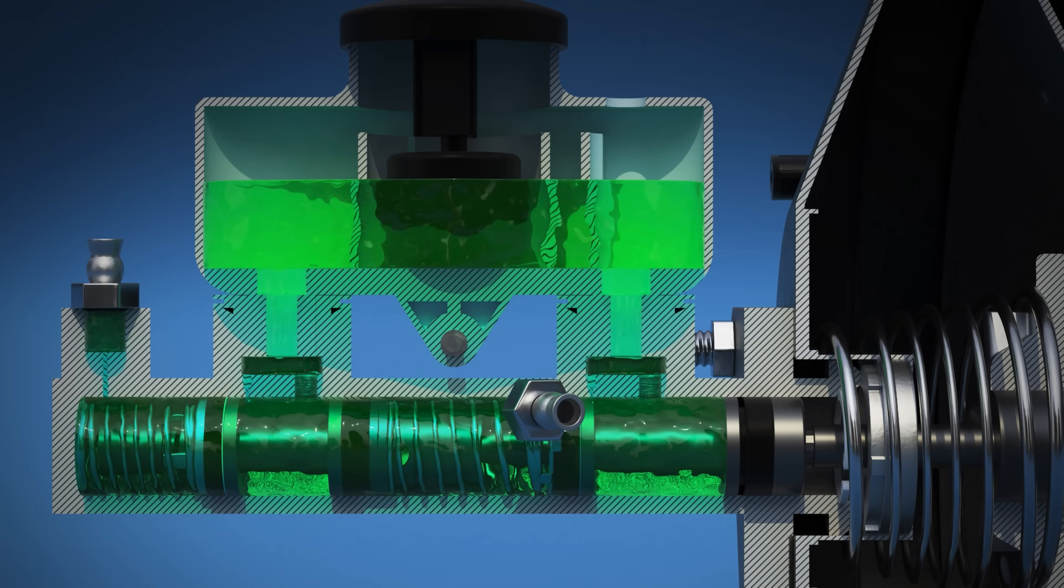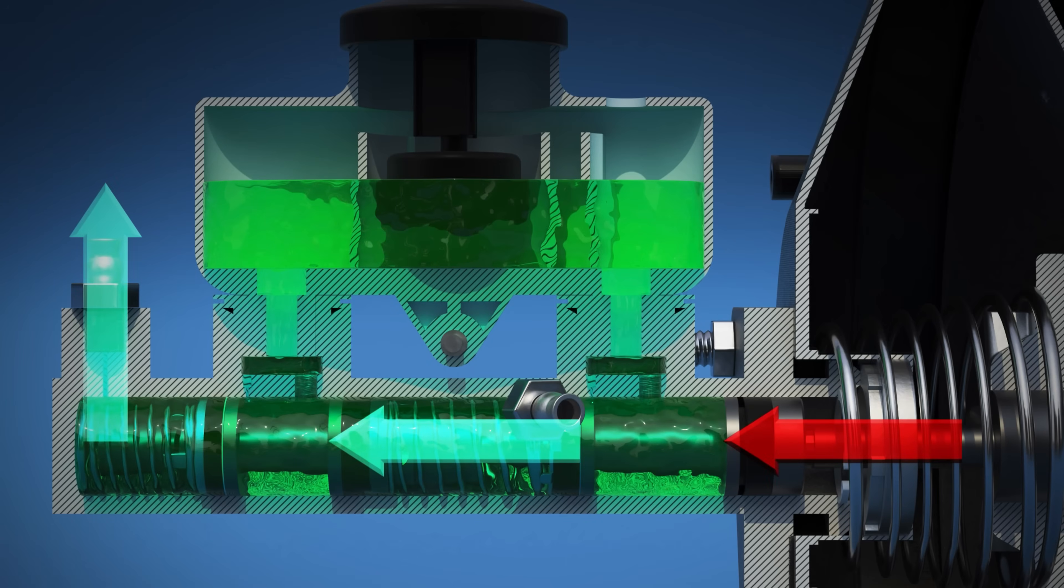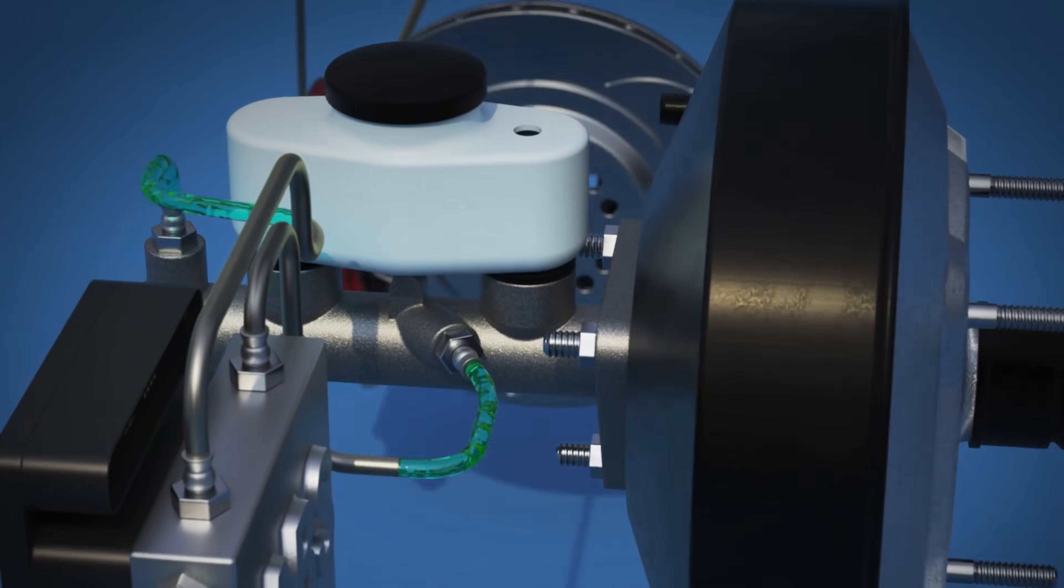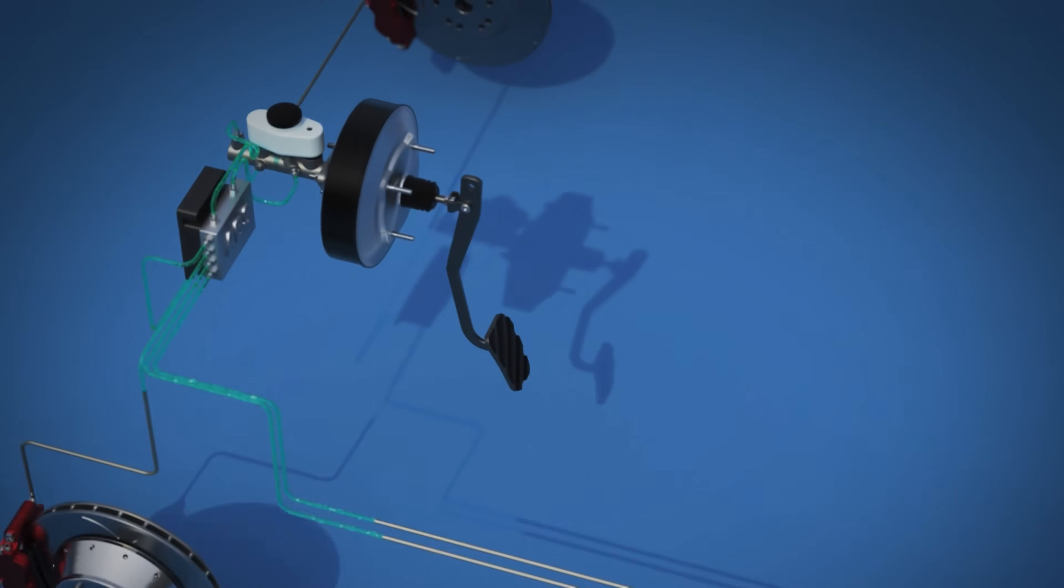The brake fluid within the reservoir is compressed by this movement, converting the mechanical pressure from the brake pedal into hydraulic force. The now pressurized brake fluid is then forced through the master cylinder outlet ports and through the brake lines to each wheel.